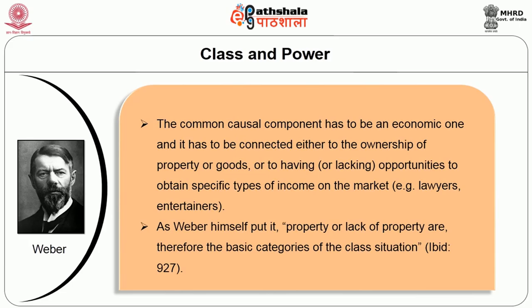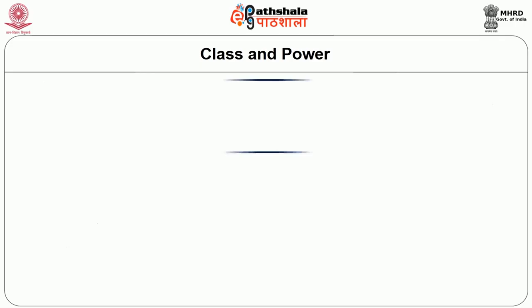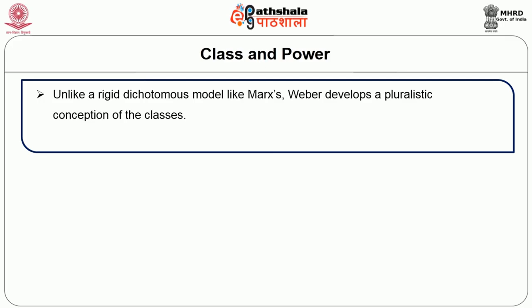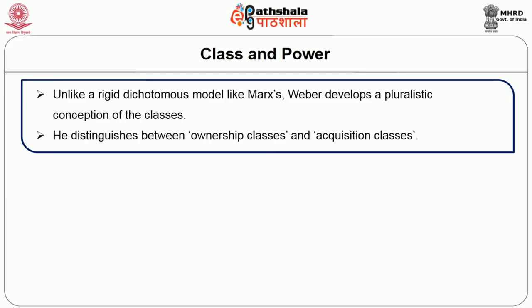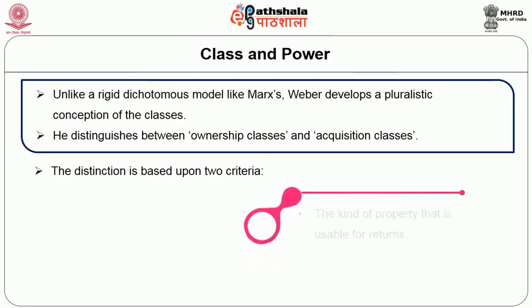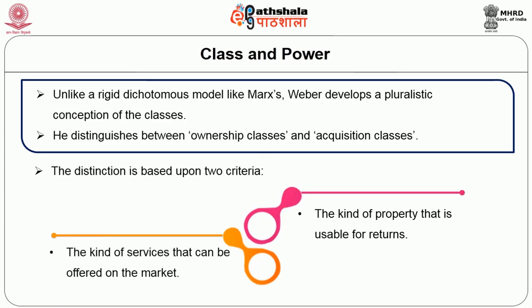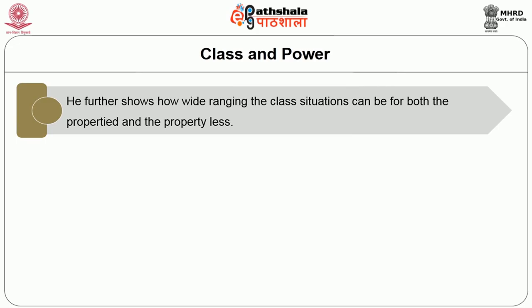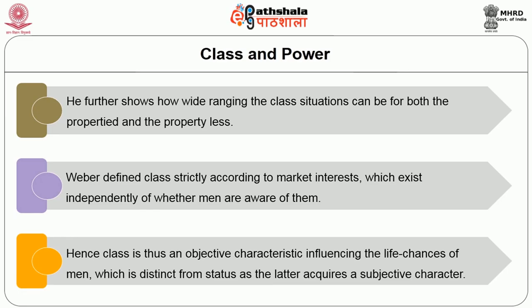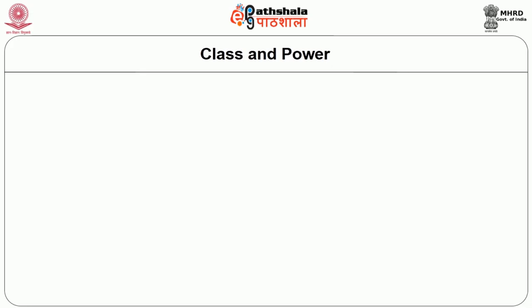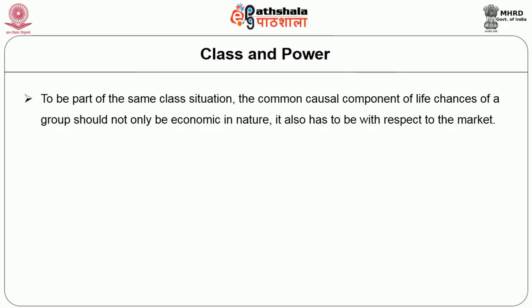As Weber put it, property or lack of property are the basic categories of class situation. Unlike Marx's rigid dichotomous model, Weber developed a pluralistic conception of class, distinguishing between ownership classes and acquisition classes based on the kind of property usable for returns and the kind of services offered on the market. Weber defined class strictly according to market interests, which exist independently of whether people are aware of them. Hence class is an objective characteristic influencing life chances, distinct from status which acquires a subjective character.